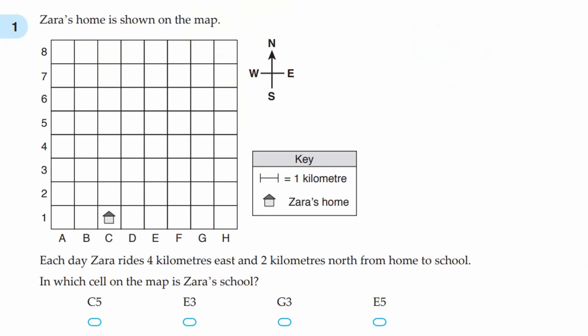Question number 1: Zara's home is shown on the map. Each day, Zara rides 4km east and 2km north from home to school. In which cell on the map is Zara's school? Now, we always need to look at the key, because that's really important.